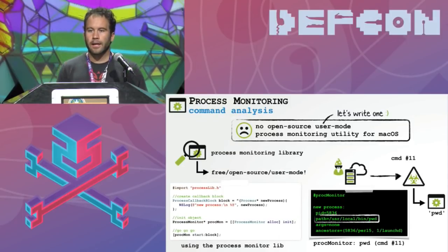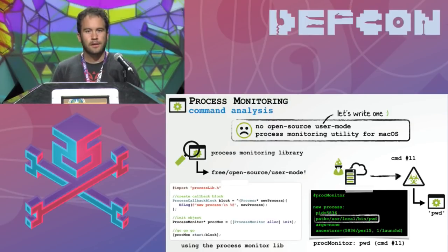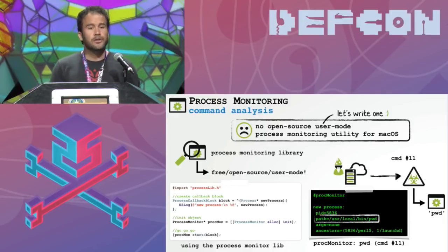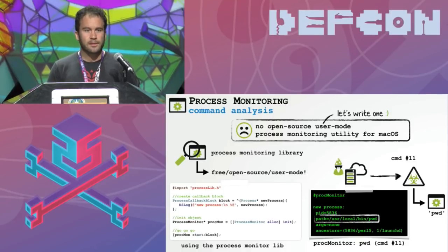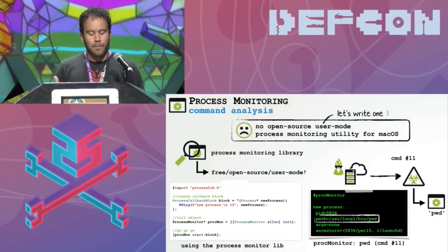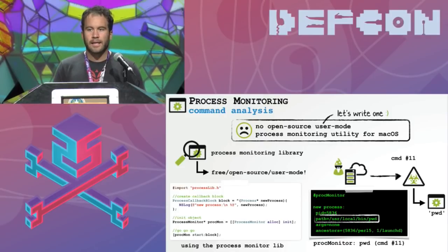Next up is process monitoring. This is important because the malware probably spawns off other processes or executes shell commands. Since dtrace is neutered on recent versions of Mac OS, there's no easy way to do process monitoring in user mode. So I wrote an open source, free process monitoring library that allows us to see what the malware is doing. For example, when we task the malware with command number 11, we can see it executes the PWD command to get the current working directory.